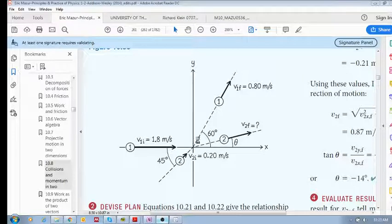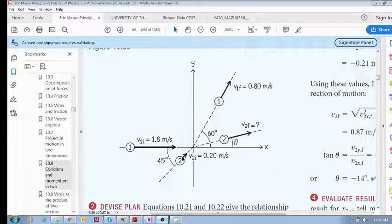We know object one's initial information, we know object two's initial information, and we know object one's final velocity and direction, but we don't know anything about object two. We don't know its velocity and direction. The one thing we do know is that object two is twice the inertia or the mass of object one.